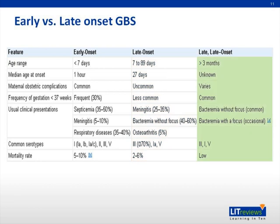Late-late onset GBS infection occurs in infants more than three months of age. Commonly, these are premature infants. Among the risk factors are prolonged hospital course, likely related to prematurity, an immature immune system, and persistent mucosal colonization.